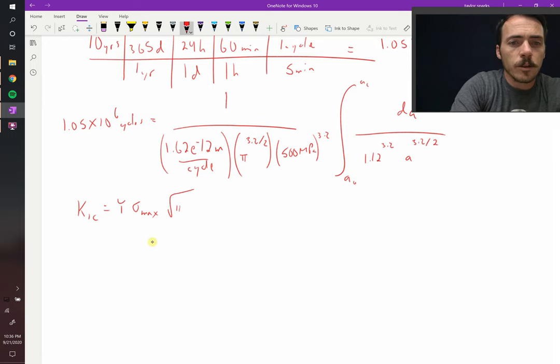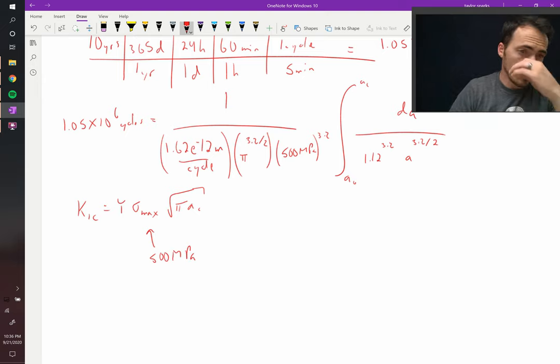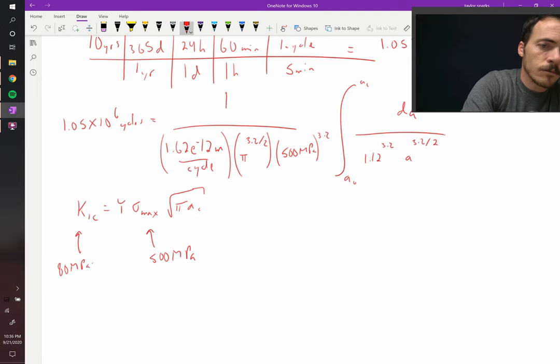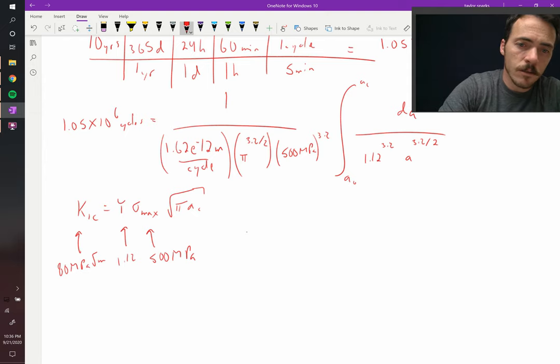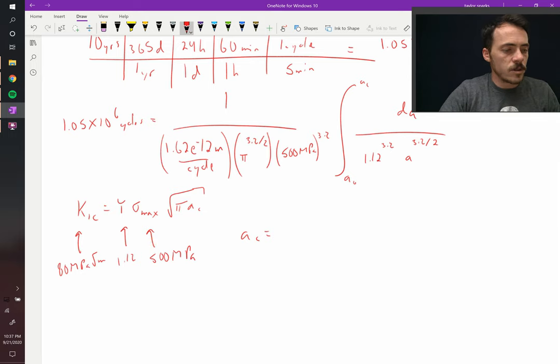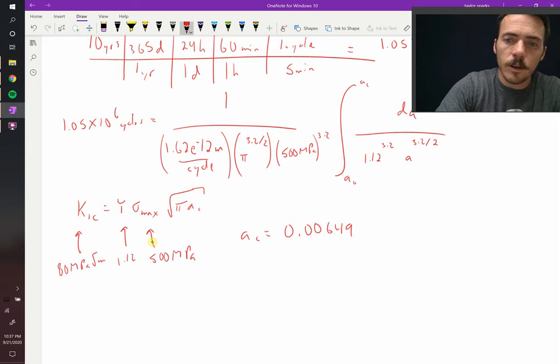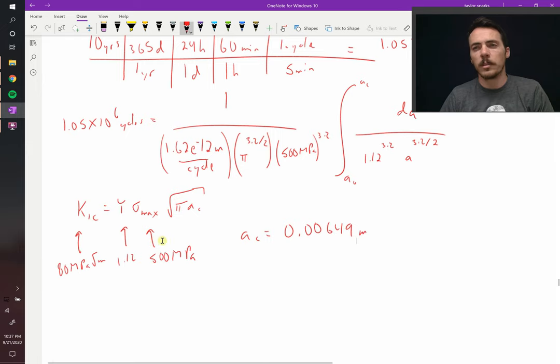So this will be 500 MPa. We're told that the fracture toughness is 80 MPa root meters, Y is 1.12, so we can solve for the critical flaw size. The largest the flaw will ever get is, when I plug these numbers into my calculator, I get a value of 0.00649 meters, so about six and a half millimeters.